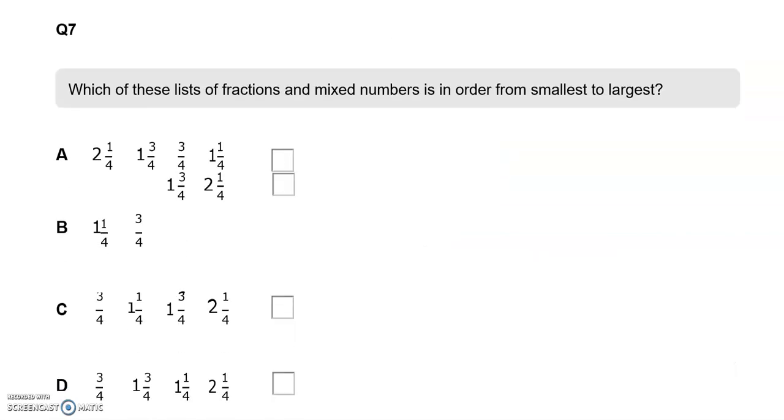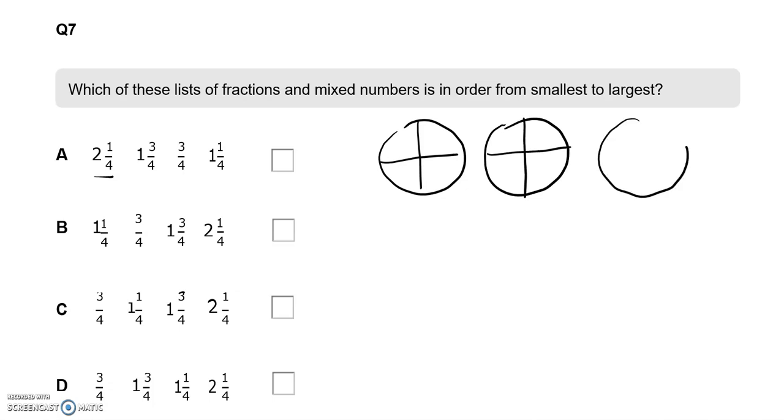Question number seven. Which of these lists of fractions and mixed numbers is in order from smallest to largest? Let's convert them all to fractions. So this one is two and one quarter. So two whole ones and one quarter. Two whole ones will have four quarters and another four quarters, eight quarters. Add one quarter as well. So that is nine quarters. The second one will have a whole, which is four quarters and three quarters. That is seven quarters. This one is just three quarters. One whole has four quarters and another one five quarters.